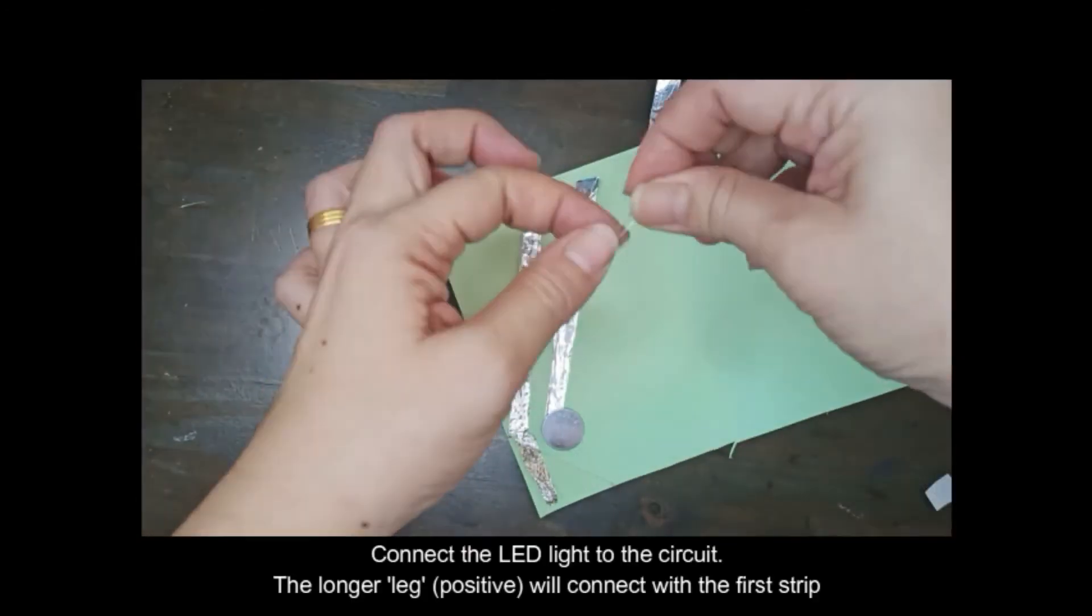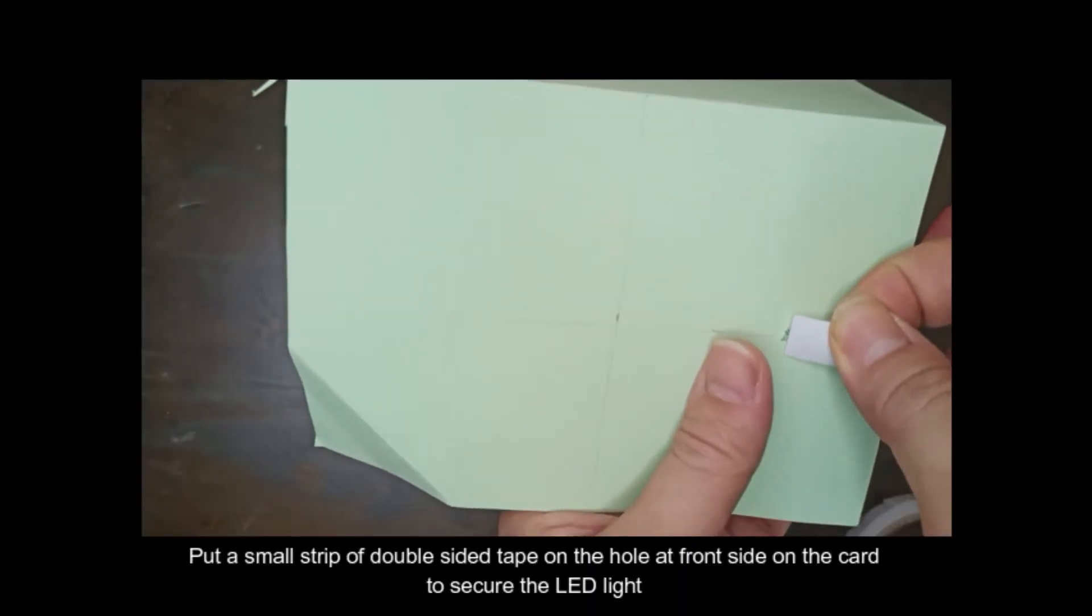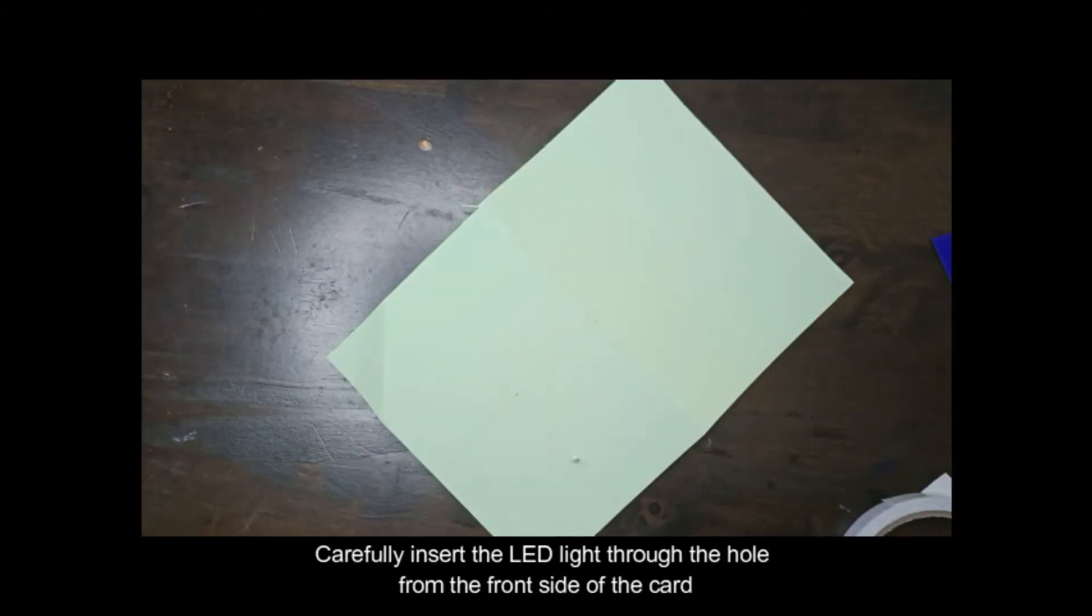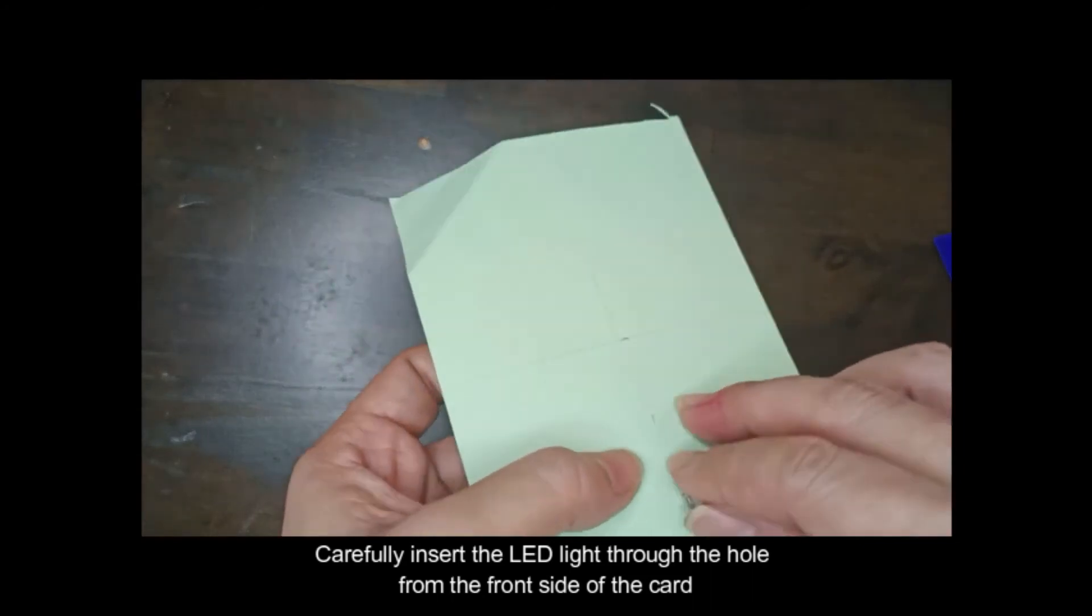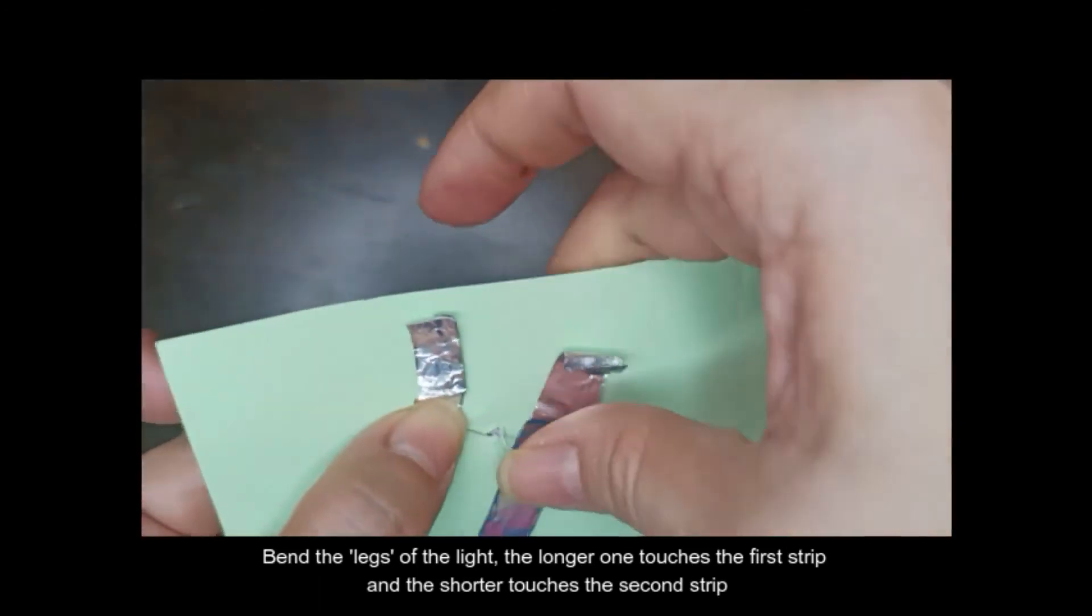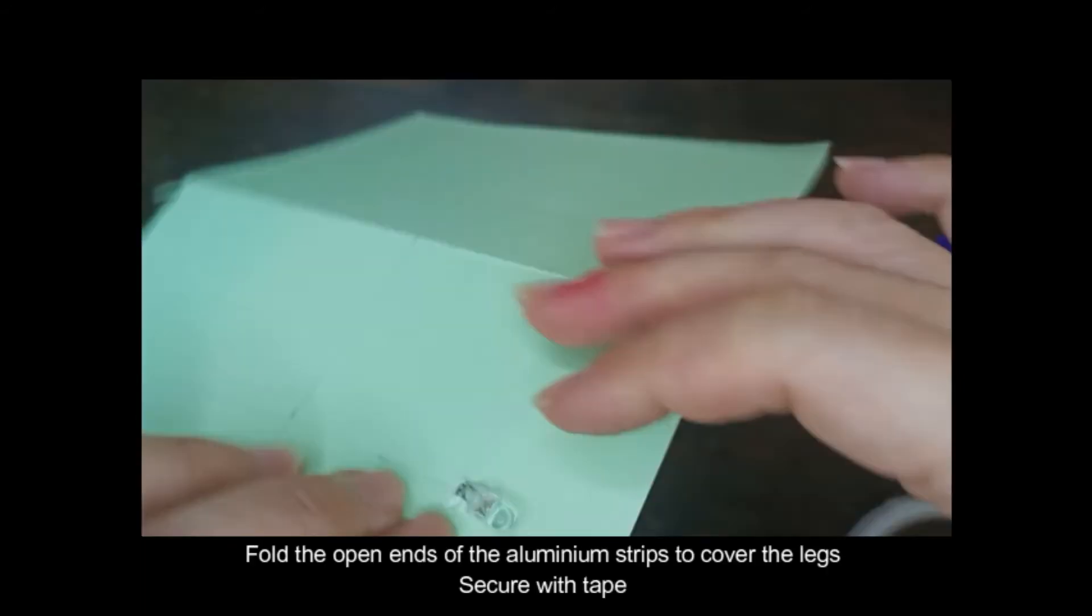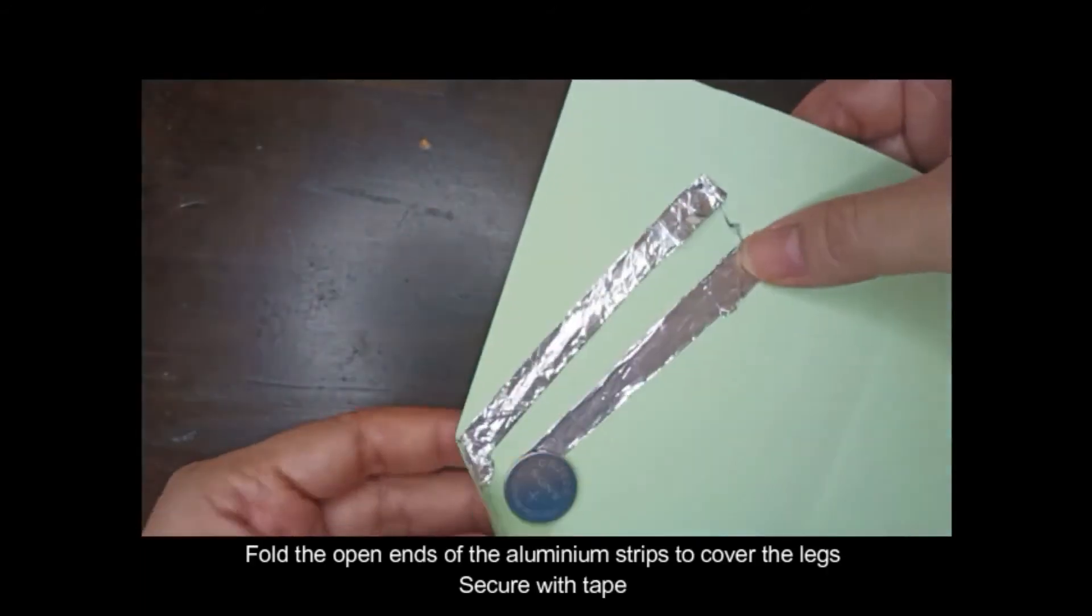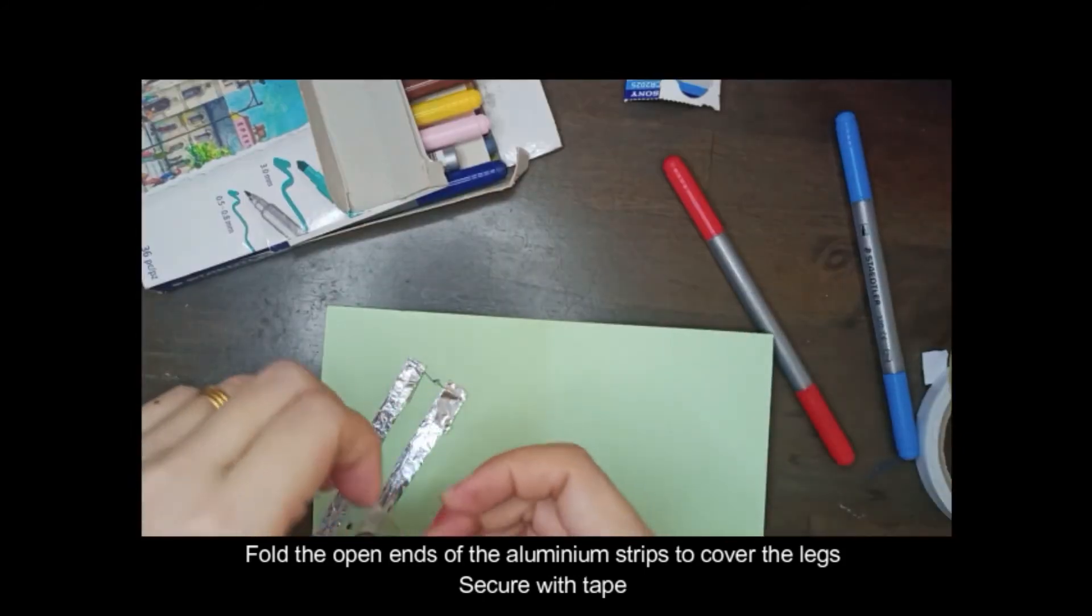Connect the LED light to the circuit. The longer leg will connect to the first strip. Put a small strip of double-sided tape on the hole at the front side of the card to secure the LED light. Carefully insert the LED light through the hole from the front side of the card. Bend the legs of the light. The longer one touches the first strip and the shorter touches the second strip. Fold the open ends of the aluminum strips to cover the legs. And then secure with cellophane tape.